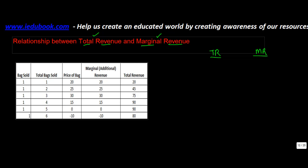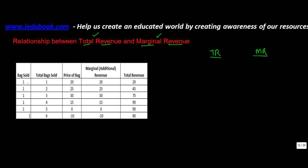Let's see what's the relationship between these two. The number of bags which are sold keeps on increasing — from one it becomes two, from two it becomes three, from three it becomes four, and so on. Let's take the case from one to two. The price per bag when we sold one bag was 20, and when it was the second bag it was 25. The marginal revenue in both cases were 20 and 25. The total revenue was 20 in the first case, and the additional revenue generated from the sale of the other bag — we added this 20 here and we got 45.